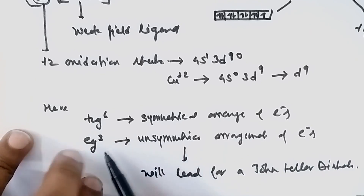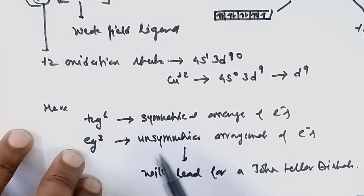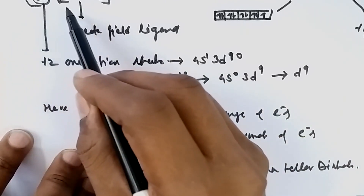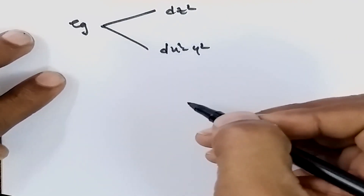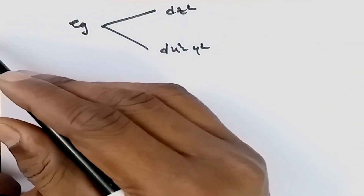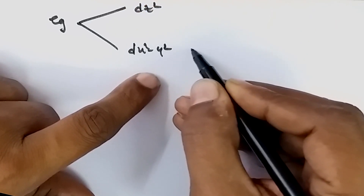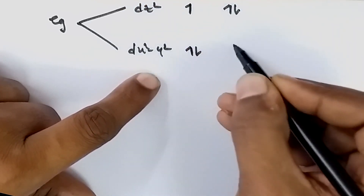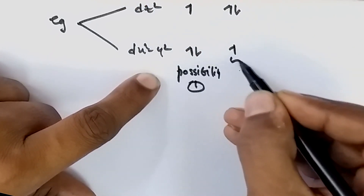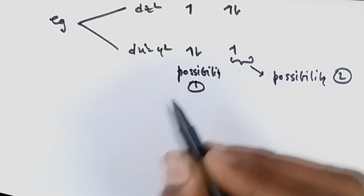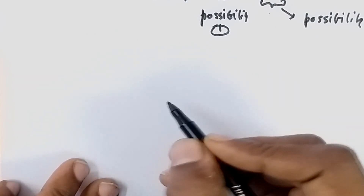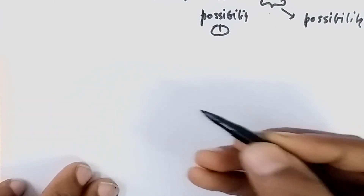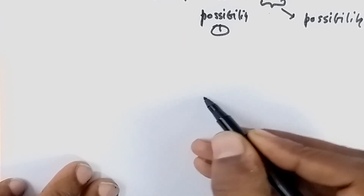Due to the unsymmetrical eg arrangement in the copper complex, the axial bond will either get elongated or compressed. In the eg orbital there are two sub-orbitals: dz² and dx²-y². The unsymmetrical eg³ electron can arrange as two electrons in dz² and one in dx²-y², or two in dx²-y² and one in dz². These two possibilities lead to either elongation or compression, which can be understood through a combined energy diagram.